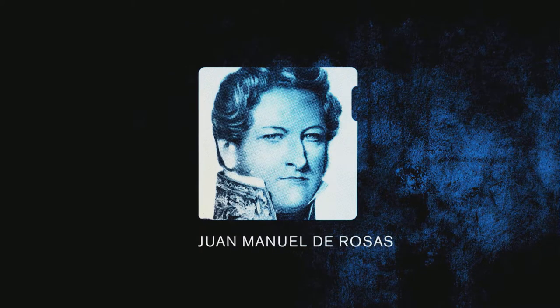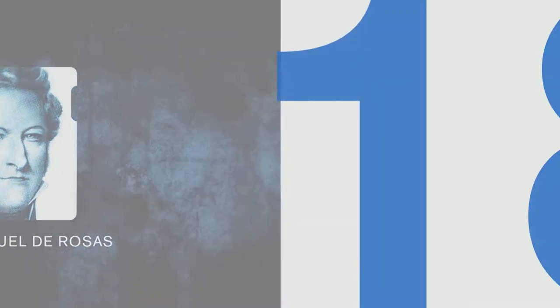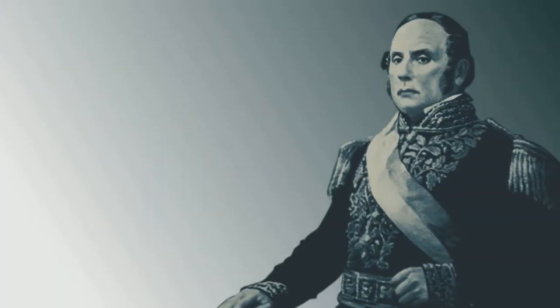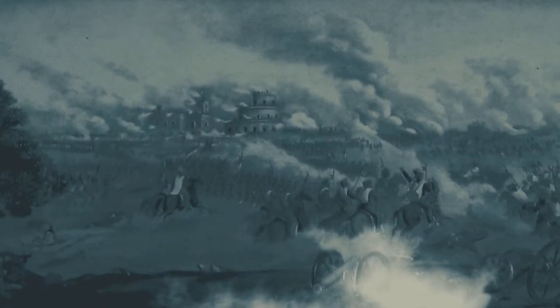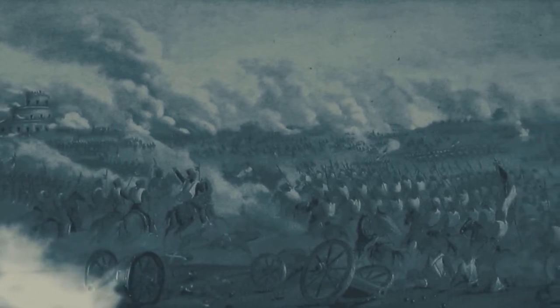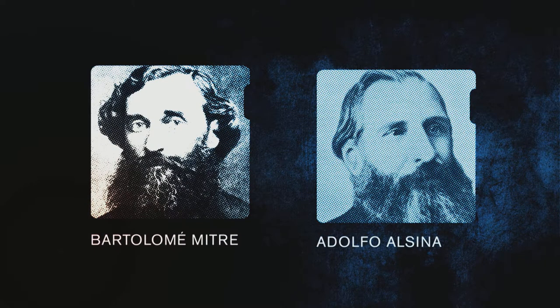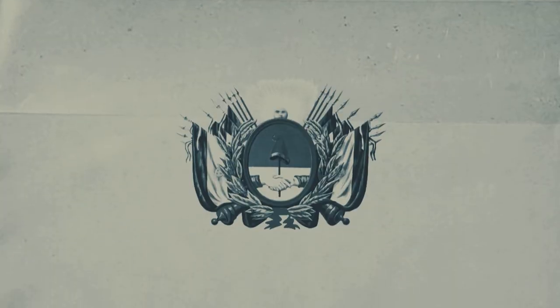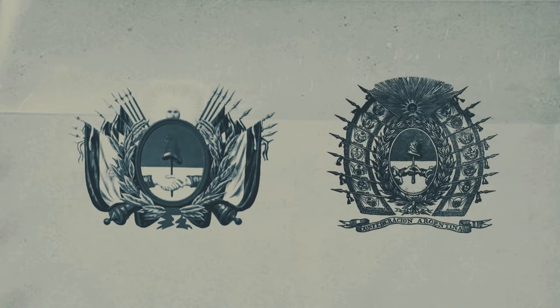El gobierno de Rosas no logró consolidar la organización del país. En 1851, Justo José de Urquiza, gobernador de Entre Ríos, formó el Ejército Grande y con la ayuda del Brasil, Buenos Aires y algunos sectores del interior, derrotó definitivamente a Rosas en la Batalla de Caseros. Al año siguiente, Bartolomé Mitre y Adolfo Alsina dieron un golpe de Estado que generó una profunda división: el Estado de Buenos Aires por un lado, y las demás provincias nucleadas en la confederación con capital en Paraná por el otro.